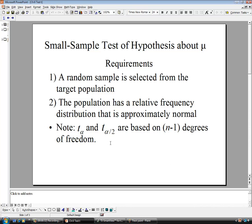Now both t of alpha and t of alpha divided by 2 are based on n minus 1 degrees of freedom. So before we only used t of alpha over 2 and it had n minus 1 degrees of freedom. Now we're going to use alpha because we can have a one-tailed test.